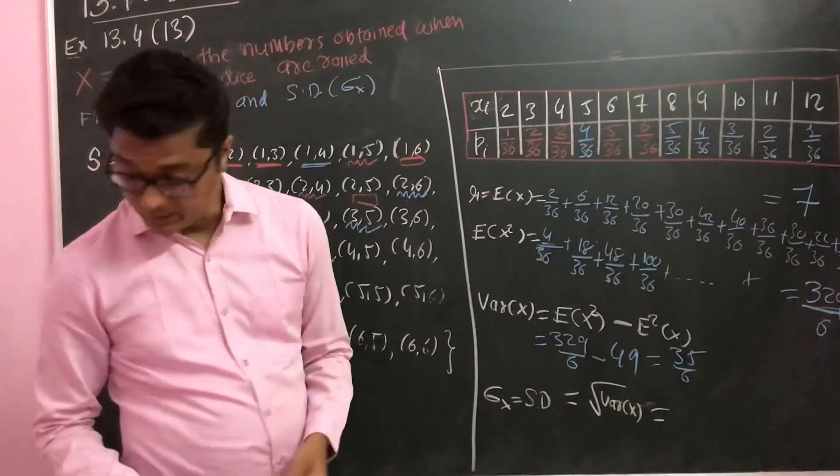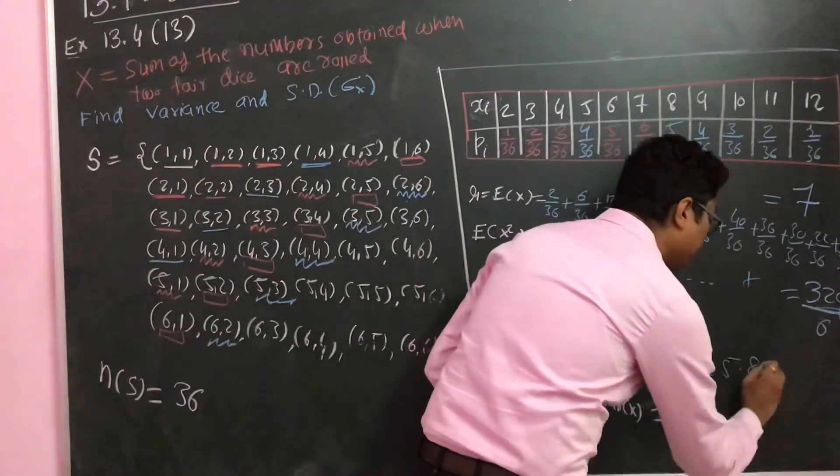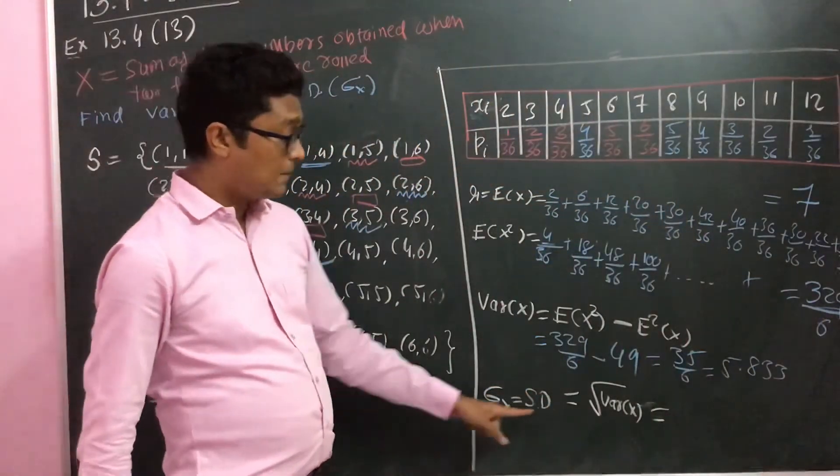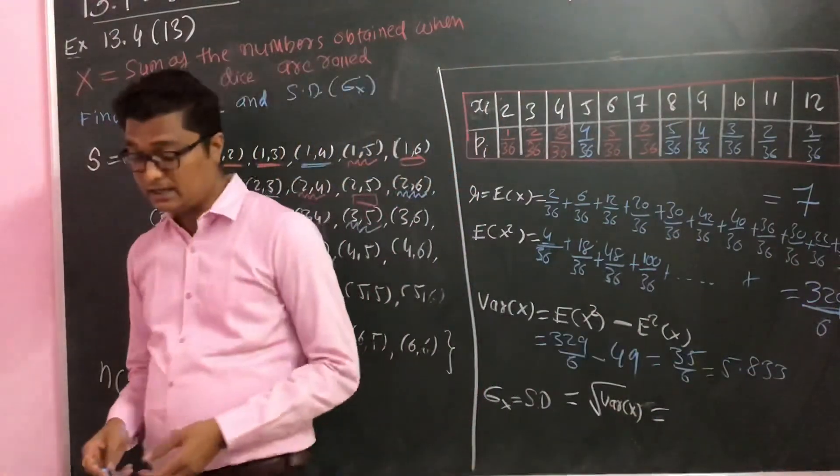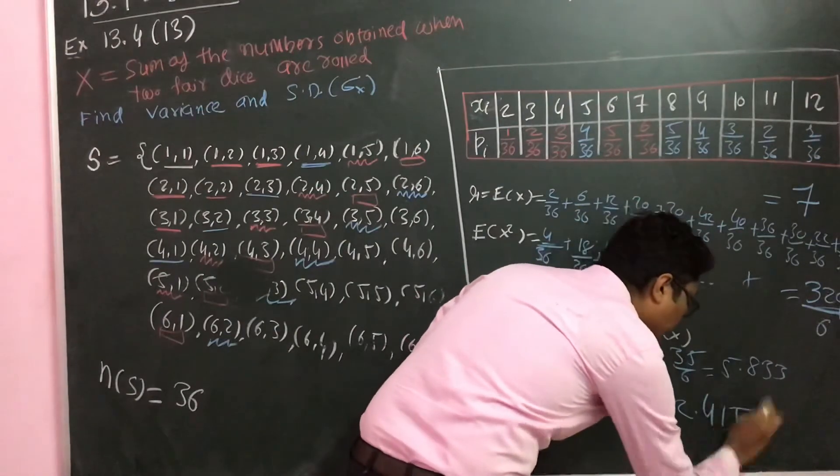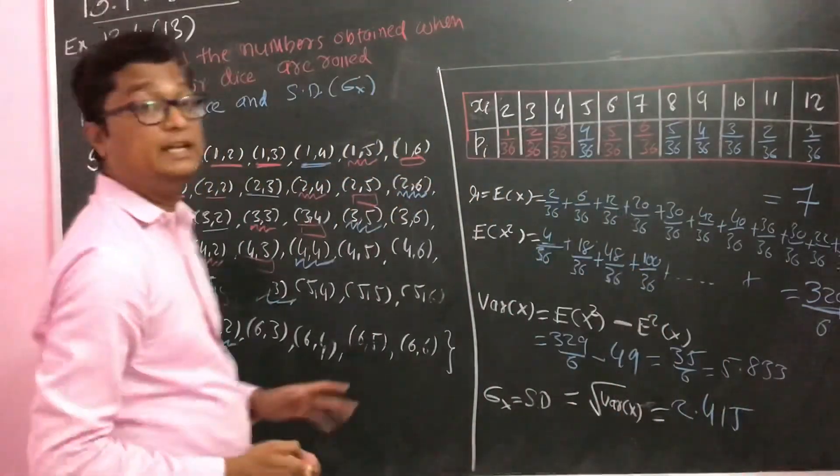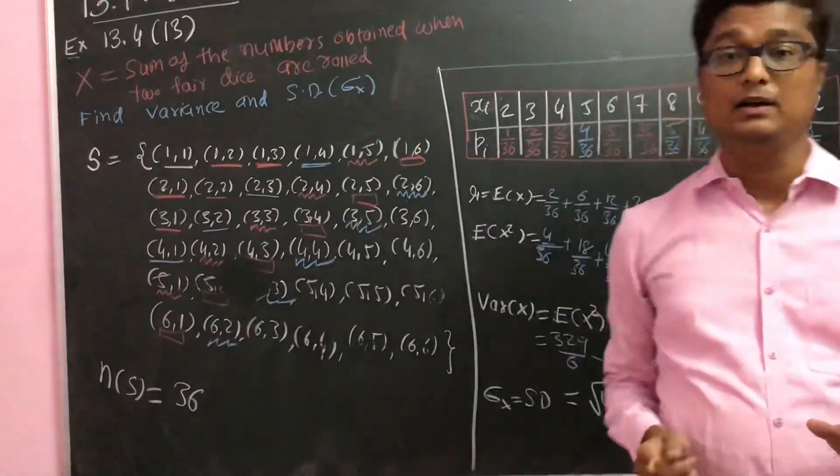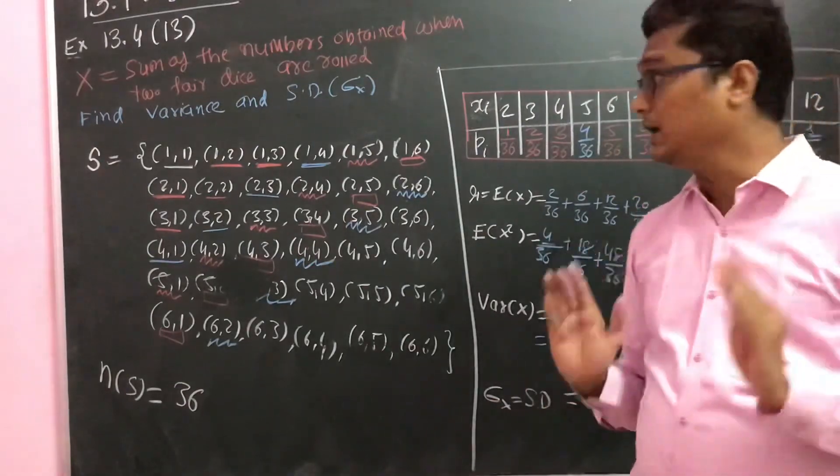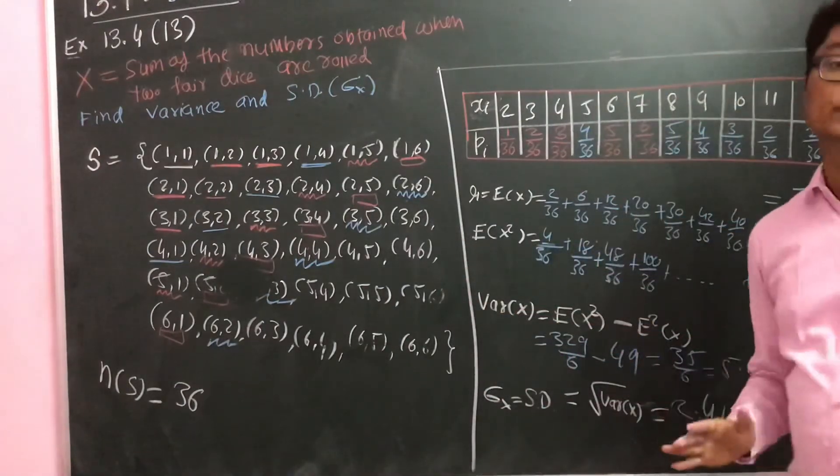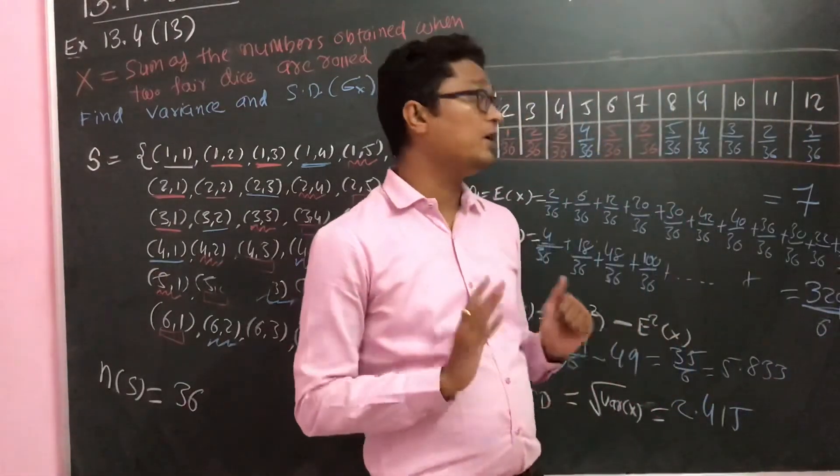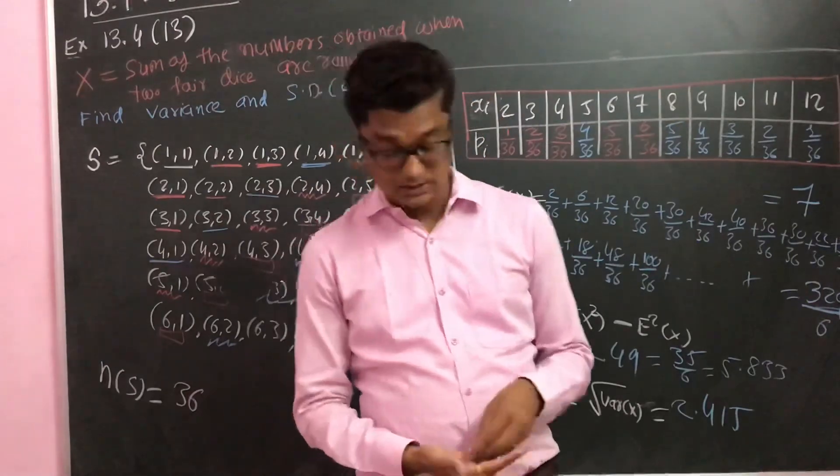If you convert this to decimal points, it is 5.833. And the standard deviation is the square root, which is 2.415. Your calculation mistakes can happen, so you should be careful about that. Otherwise, it is easy.